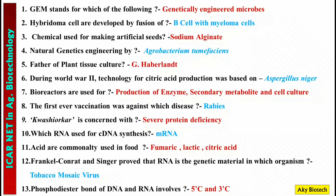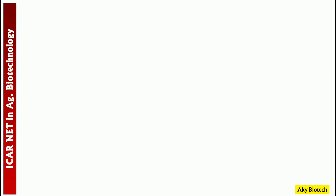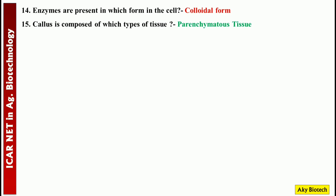Question 13: The phosphodiester bond of DNA and RNA involves — the 5-prime carbon and 3-prime carbon. Question 14: Enzymes are present in which form in the cell? — They are present in colloidal form. Question 15: Callus is composed of which type of tissue? — Parenchymatous tissue.